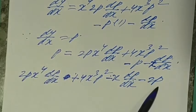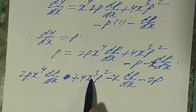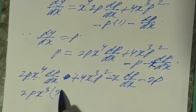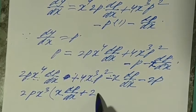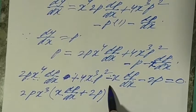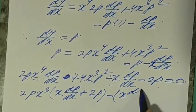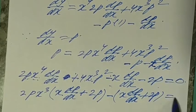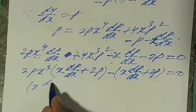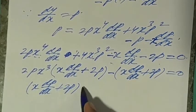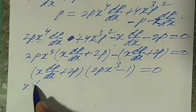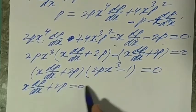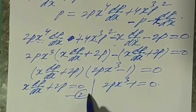This factors as (x·dp/dx + 2p)(2px³ - 1) = 0, giving two equations: equation 2: x·dp/dx + 2p = 0, and equation 3: 2px³ - 1 = 0.